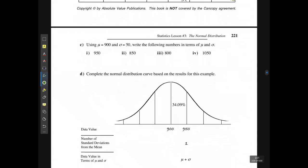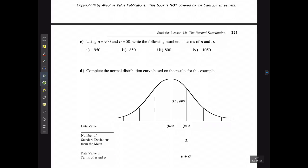Example C says using the fact that mu or the mean is 900 and the standard deviation is 50, write the following numbers in terms of mu and sigma. This one would be 50 away from 900, so I could say that is the same as mu plus one sigma. 900 plus 50 equals 950.